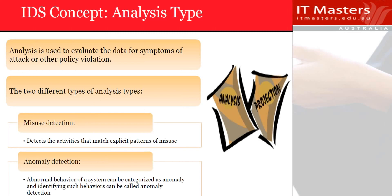To be able to make misuse detection successful, we should have the right patterns installed. Here's the question: if you have an IPS which is just one hour out of date, and right in that one hour a new attack is launched — can your IPS do something? Since misuse detection only looks for pattern matches, it's probably not going to be good enough. So you need something else — anomaly detection.